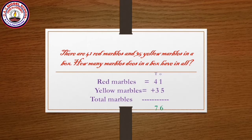Example one: There are 41 red marbles and 35 yellow marbles in a box. How many marbles are there in all? Red marbles are 41, yellow marbles are 35. First, you have to find out the total.